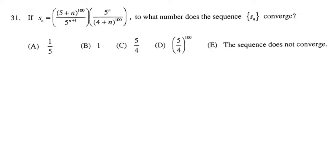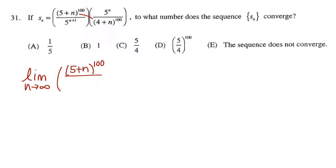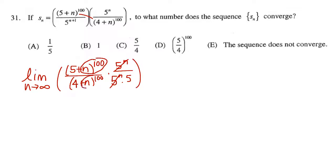Our goal here is to find what number this sequence converges to. Let's start off by talking about the limit as N approaches infinity. I'm going to put these two powers over each other — so (5 + N)^100 over (4 + N)^100 — and then 5^n over 5^n times 5. Those are going to cancel each other out, and if we look at the highest power on top compared to the highest power on bottom, that's going to be dominating, so this will go out to 1.